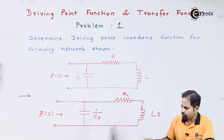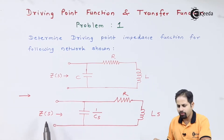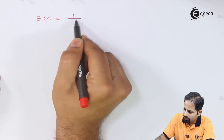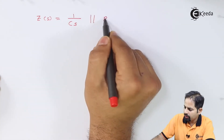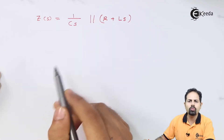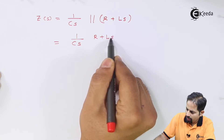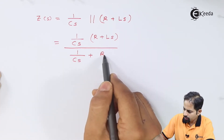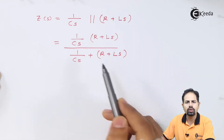The impedance for this case is straightforward because R and LS are in series, and their combination is in parallel with the capacitor. So the equivalent impedance Z(S) is 1/(CS) in parallel with (R + LS). The parallel combination is Z1·Z2 / (Z1 + Z2), which gives us [1/(CS)] × (R + LS) divided by [1/(CS) + (R + LS)].